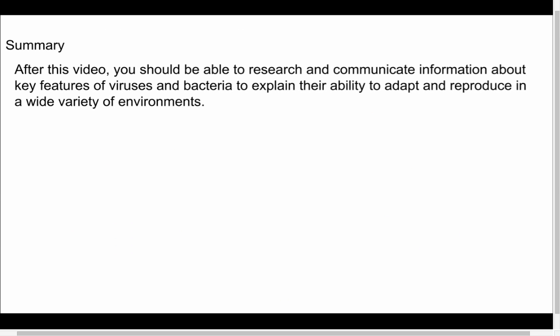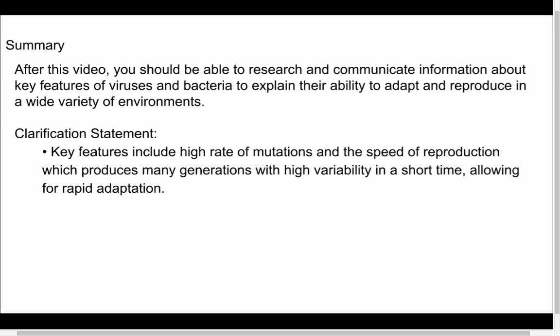In summary, after this video you should be able to research and communicate information about key features of viruses and bacteria to explain their ability to adapt and reproduce in a wide variety of environments, specifically looking at examples related to antibiotic resistance. The key features are their high rates of mutation and speed of reproduction, which produce many generations with high variability in a short period of time, creating massive diversification that allows them to enter new environments and survive when selective pressures change.